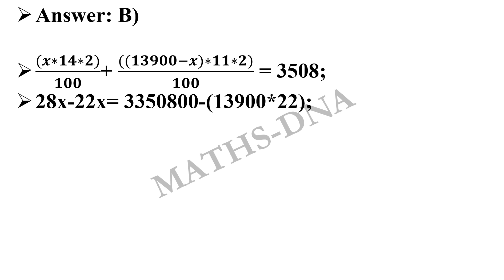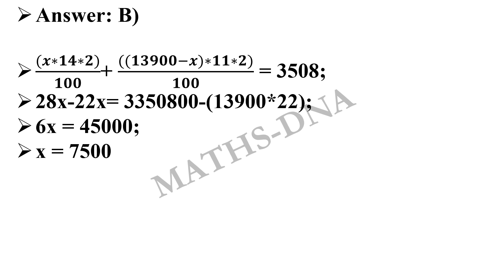Simplifying this gives us 28X minus 22X equals 3,50,800 minus 13,900 × 22. A calculator is provided in such exams, so you can simplify this. This gives us 6X = 45,000, and from here X = 7,500.